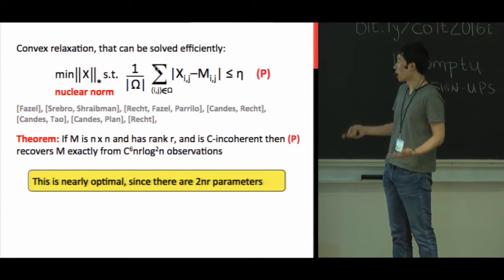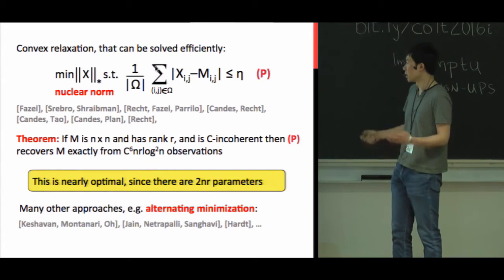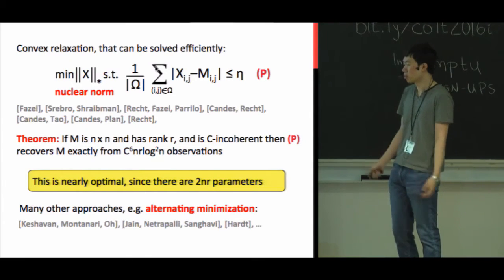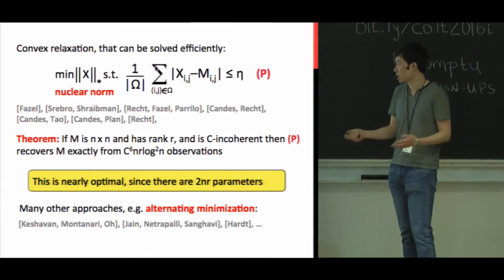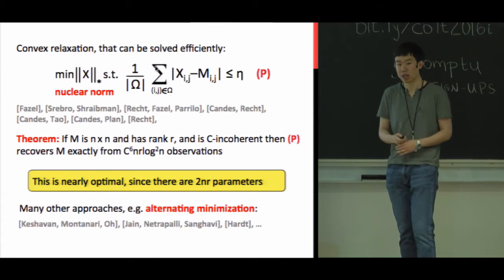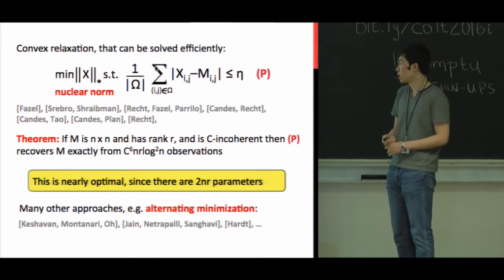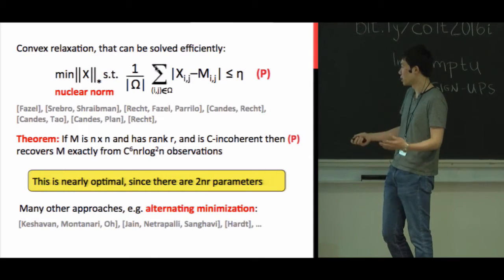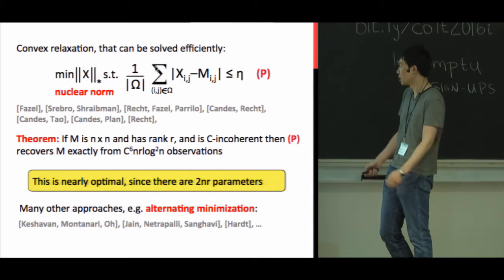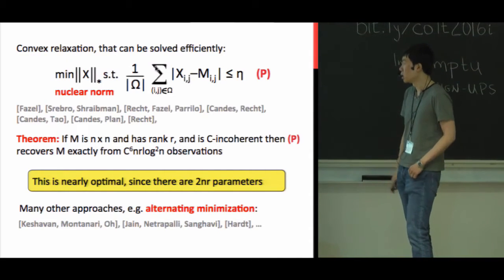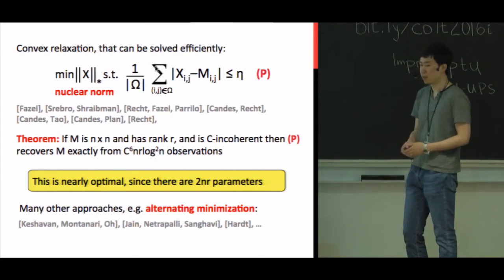There are also many other approaches to solve matrix completion. Most are non-convex — for example, alternating minimization — and there is a long line of work developing guarantees for alternating minimization as well.